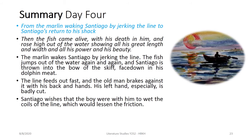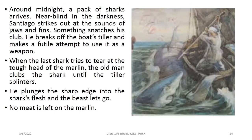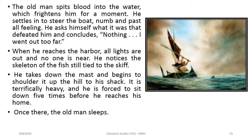Summary day 4: The marlin woke Santiago by jerking the line into his back. Then the fish came alive with the force in him and rose high out of the water, showing his great length, all his power and beauty. The marlin waked Santiago again, and the fish jumped out of the water again and again. Santiago was thrown hard against the bow but brought the fish down with a dolphin-head blow. When a large shark tried to tear at the tail of the marlin, the old man stabbed the shark until it let go. He flung the sharp edge into the shark's face, and the fish let go. Nobody was left on the marlin. When he reached the harbor, he noticed only a skeleton of the fish remained. He took down the mast and began to struggle home after his long ordeal.